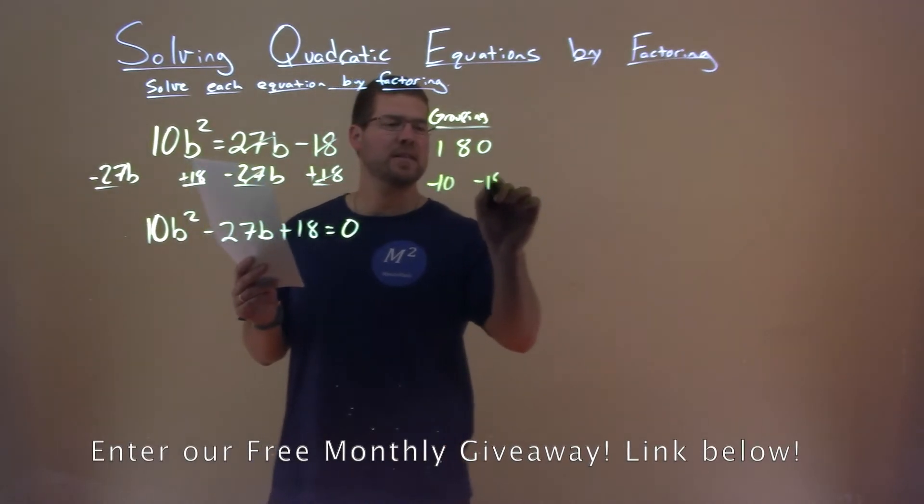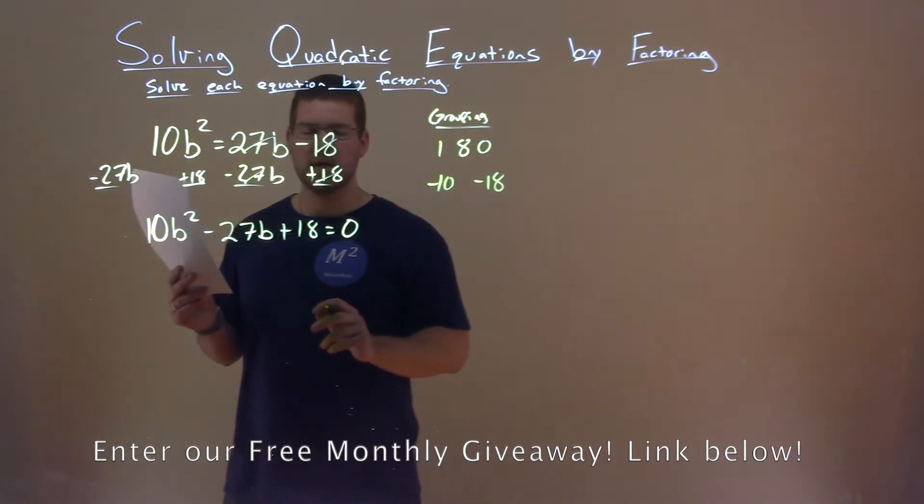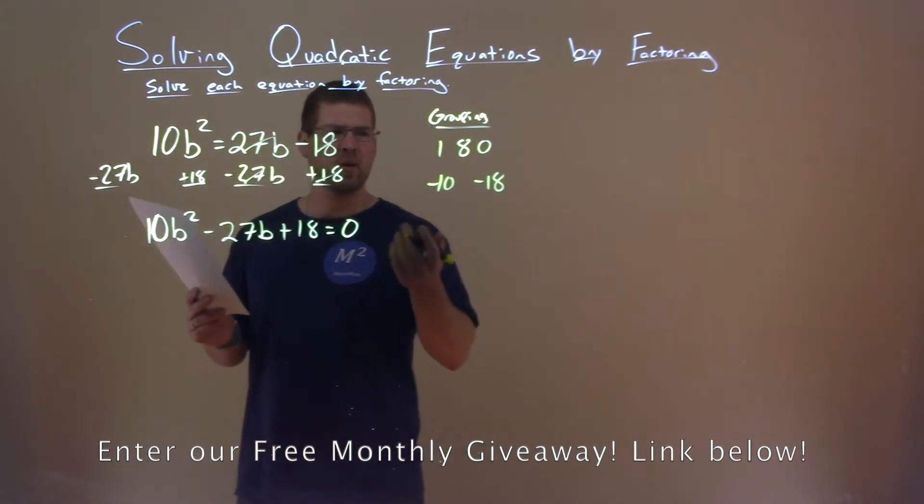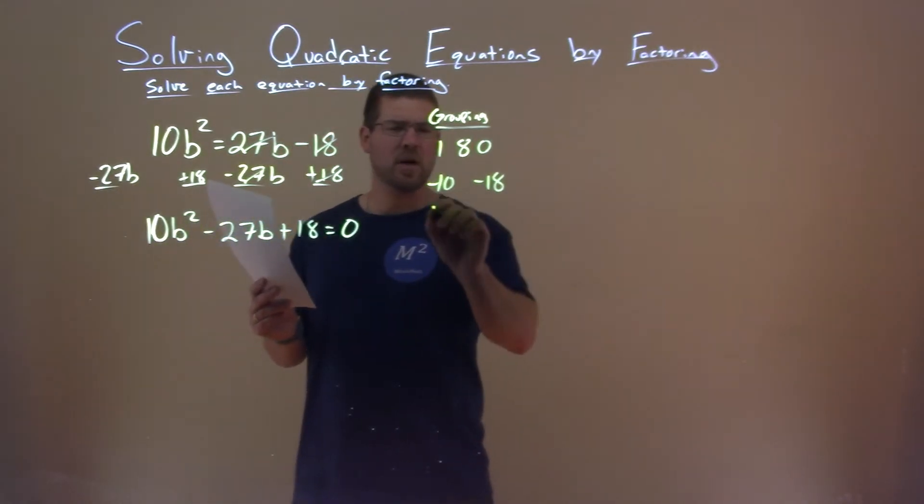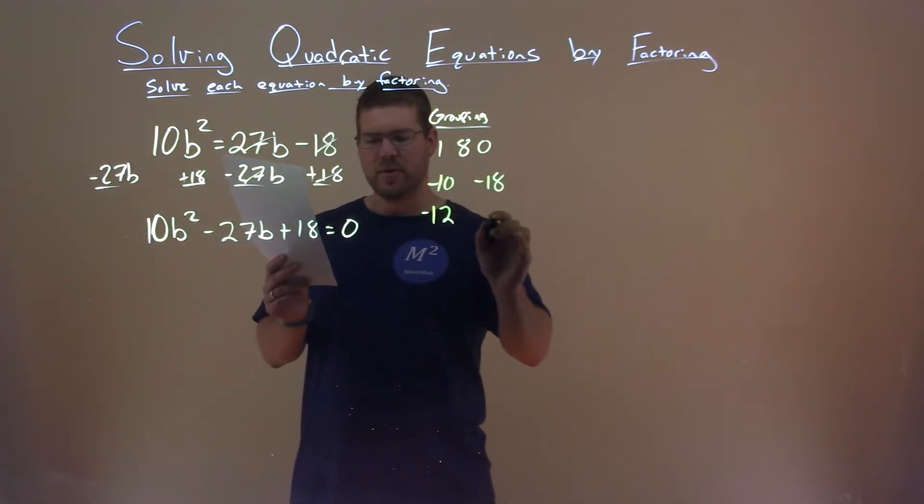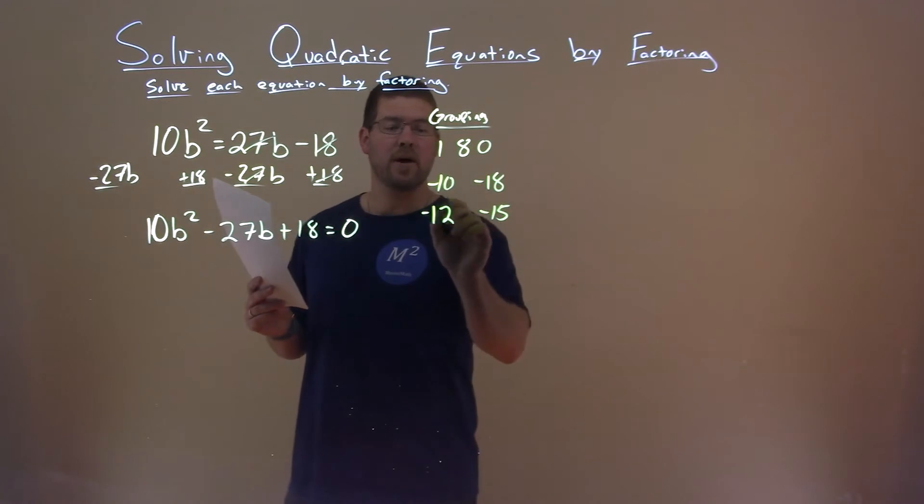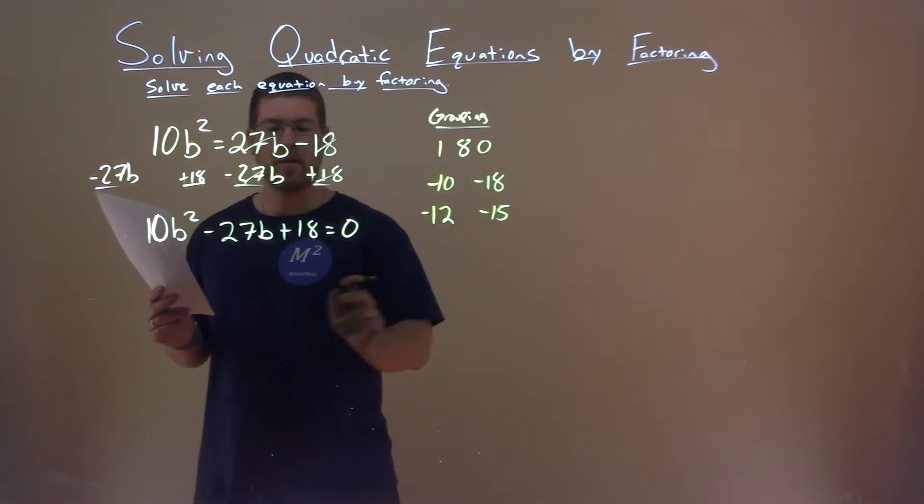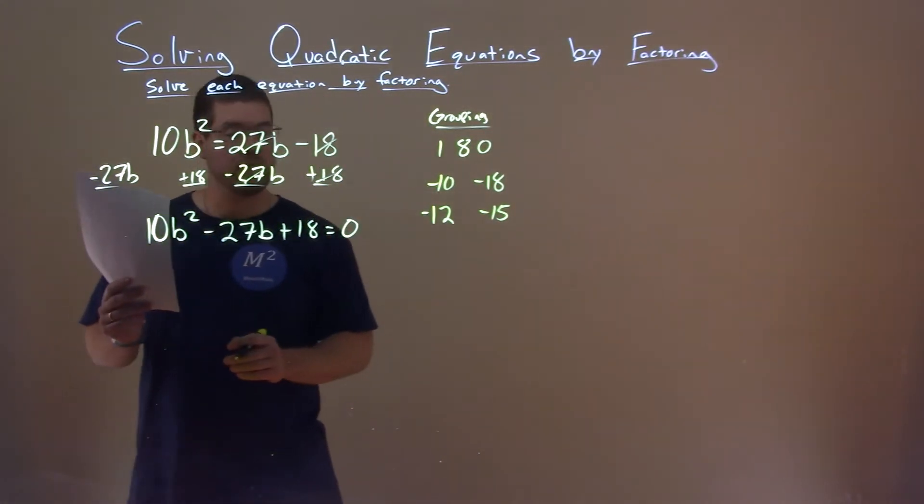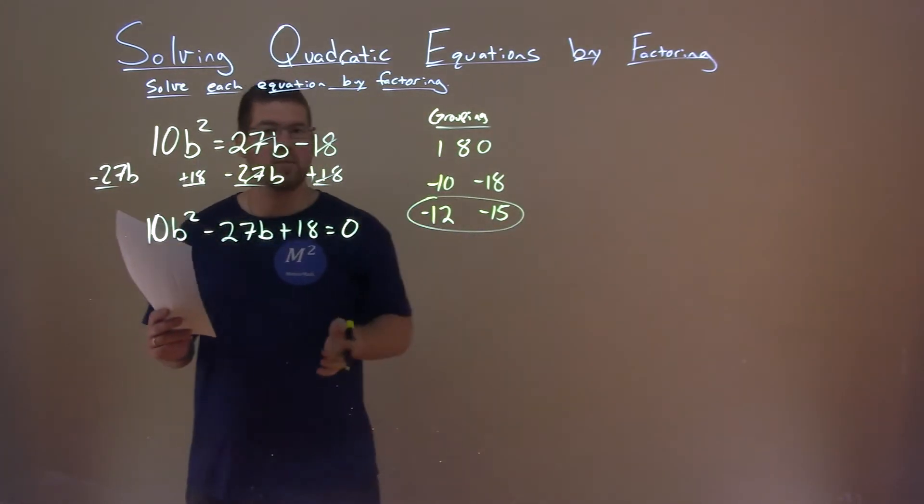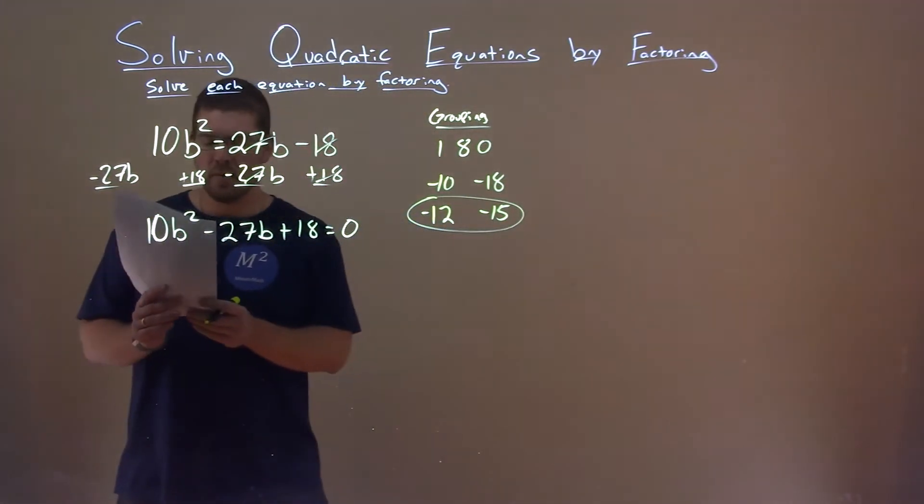Well, negative 10 and negative 18 clearly multiply to be 180, but they don't add to be negative 27. It's kind of close. What about nearby? 180 is divisible by 12, so negative 12 and negative 15. Negative 12 times negative 15 is a positive 180, and we add those together we get negative 27. So here we already found the values that we're looking for.